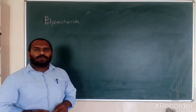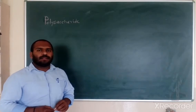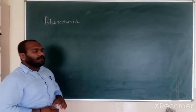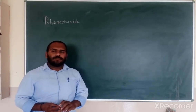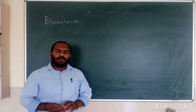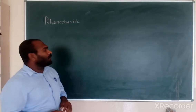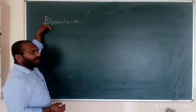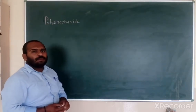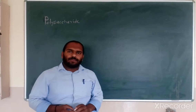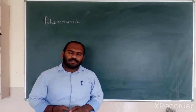Hello friends, today we are going to discuss polysaccharide. In previous lectures on carbohydrates, we have seen monosaccharide, oligosaccharide, and different examples. Now we will go for polysaccharide. These polysaccharides are made up of more than 10 units of the monosaccharide, and therefore the name is known as polysaccharide.